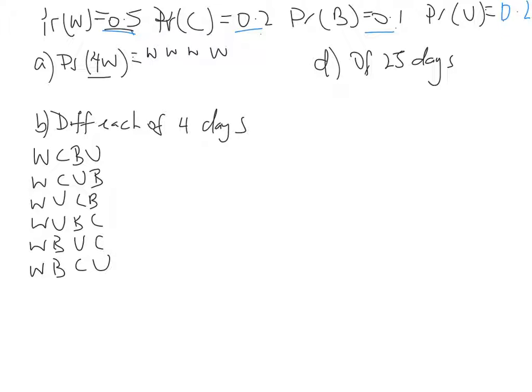It's 0.5 times 0.5 times 0.5 times 0.5, because it sounds like he's going to walk for 4 days. So he walks, and walks, and walks, and walks. We can rewrite that as 0.5 to the power of 4, and we end up with 0.0625.